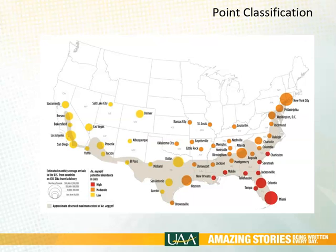Compare that to this map, which is graduated. The size of the cities is graduated — it's not proportional because there's no variation across the spectrum. Instead, there are just particular graduated sizes used to show the average number of arrivals, in this case patients with Zika. The color is also used to show the potential abundance of the disease in July.